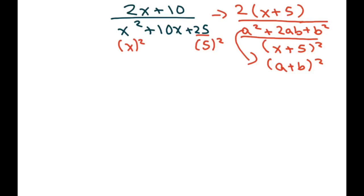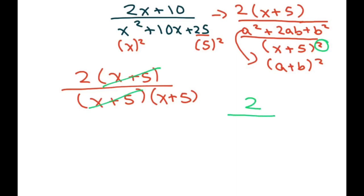Alright, so let's write it out. 2 times x plus 5, so this is a perfect square trinomial. We can write this as x plus 5 squared, which is x plus 5 times x plus 5, because there's two of them. Anyway, this cancels, and so our final answer is 2 over x plus 5.